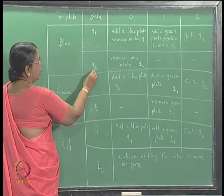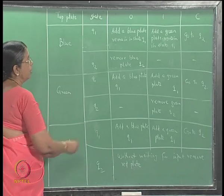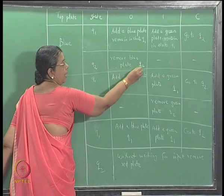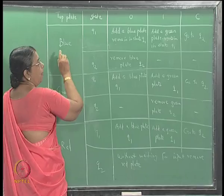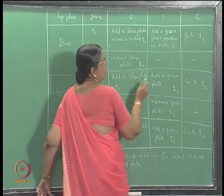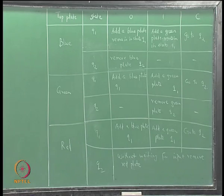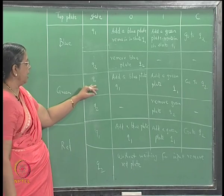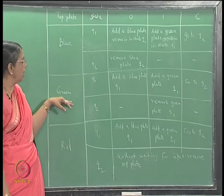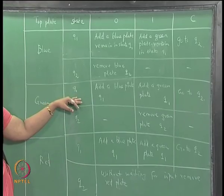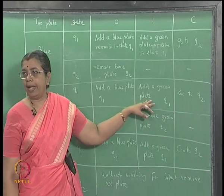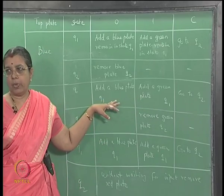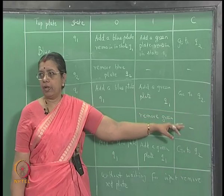When the top plate is blue and you are in state q2 and you get a 0, remove the blue plate and remain in q2. If you are in state q1, top plate is blue, and you get input c, you go to q2 without manipulating the stack. Similarly, for green — if you are in state q1 and see a 0, add a blue plate; if you see a 1, add a green plate; but you remain in state q1, and if you see a c, go to state q2.